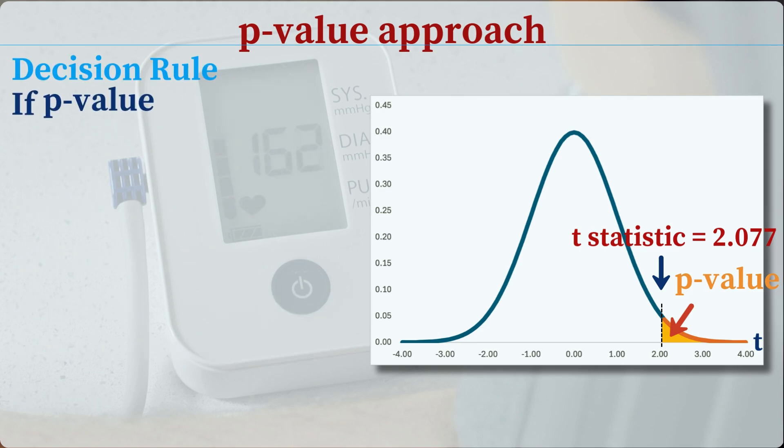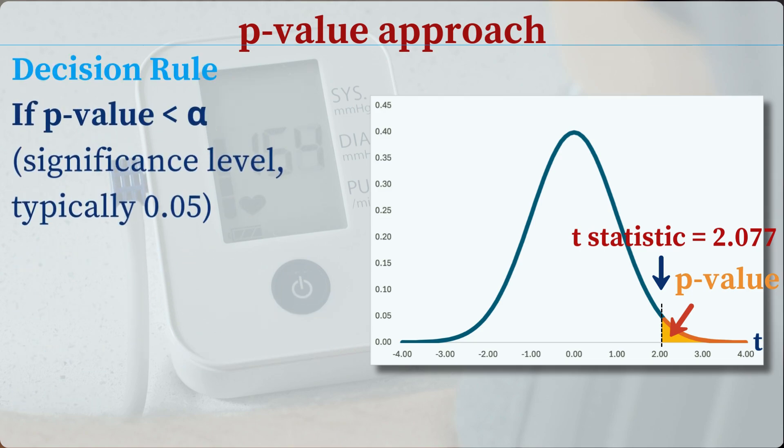If this p-value is smaller than a predetermined significance level, alpha, typically set at 0.05, we reject the null hypothesis in favor of the alternative hypothesis. This significance level acts as a threshold, indicating that the observed results are unlikely to have occurred by random chance alone if the null hypothesis was indeed true.